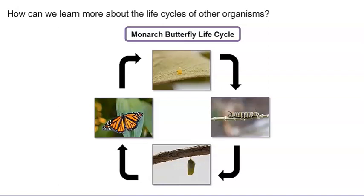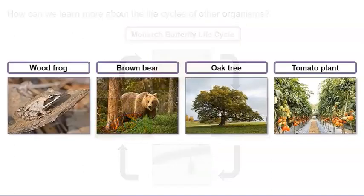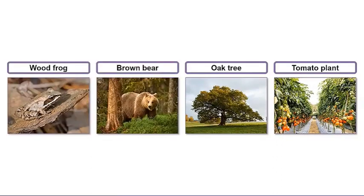Any ideas? We can observe photographs of other organisms at different stages of their life cycle. Let's get started. These photographs show the adult life cycle stage for four other organisms. We have an adult wood frog, an adult brown bear, an adult oak tree, and an adult tomato plant. I can't wait to observe each organism's life cycle.